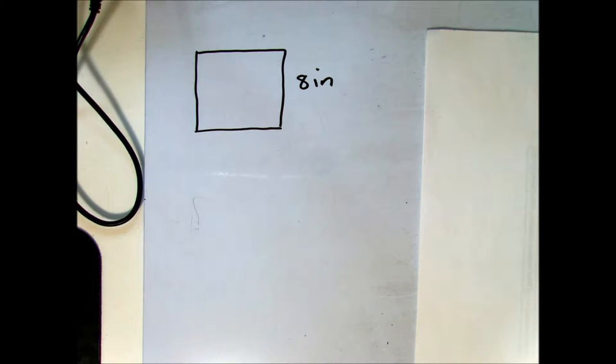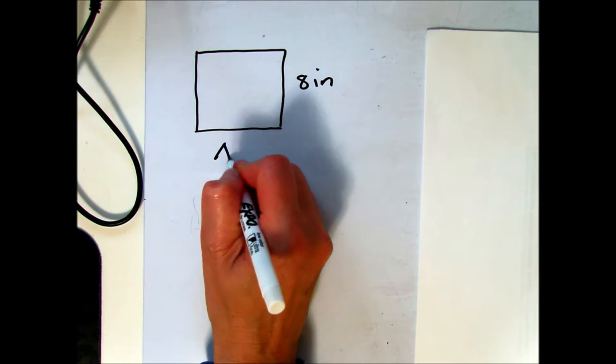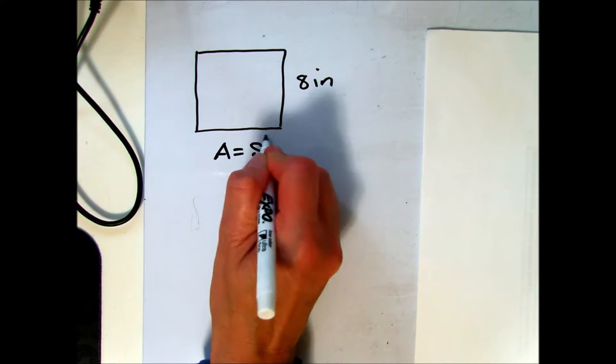To find the area of a square, we need to know the dimension of one of the sides. The area formula for a square is A equals side squared.